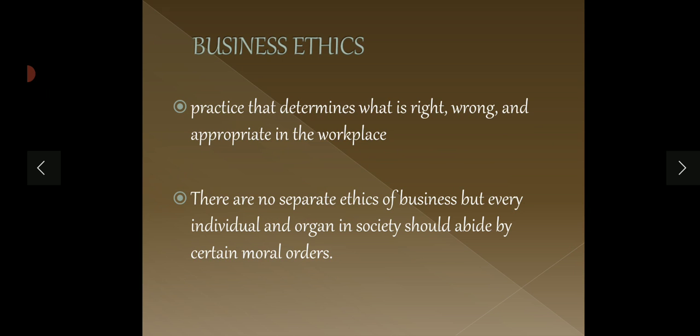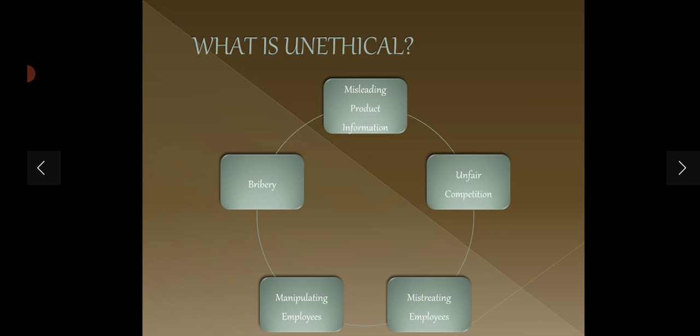First, let's talk about what is unethical in business. Number one: misleading product information — giving wrong product information is wrong. Although we now have legal procedures for it, even if there were no law, you should not provide wrong information. Number two: unfair competition. Fair competition means I am trying to increase my capacity and improve myself to survive in the market. Unfair competition means I am trying to weaken my competitor so that they cannot survive.